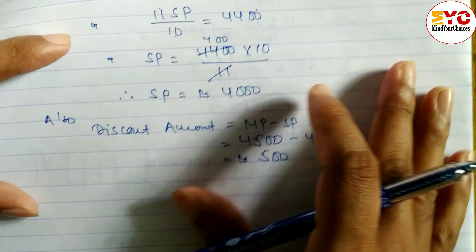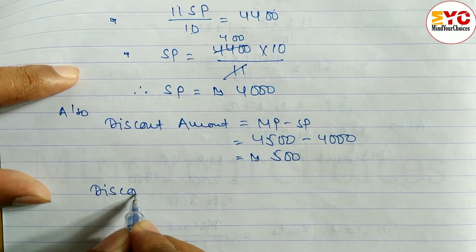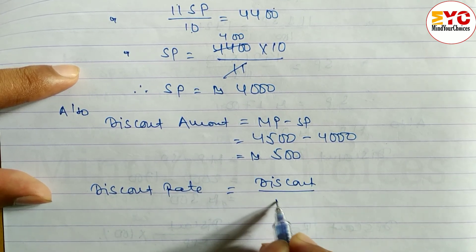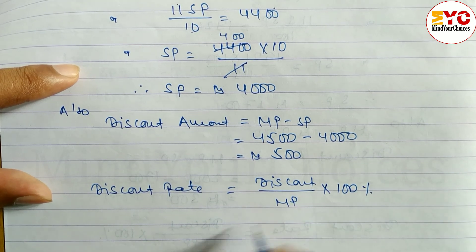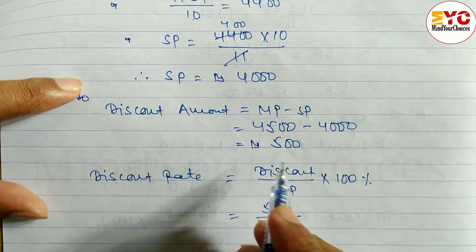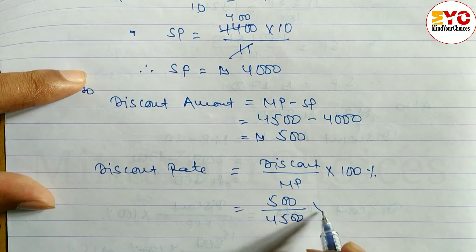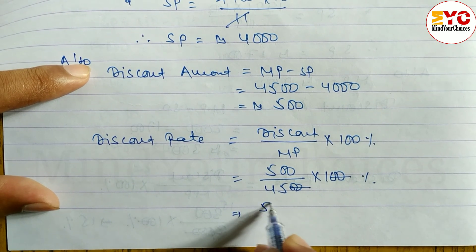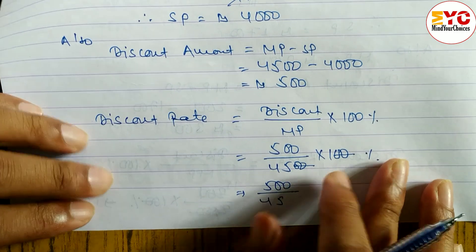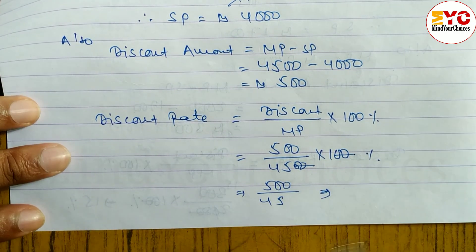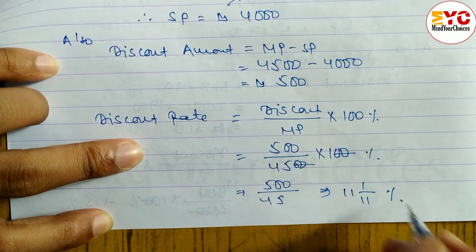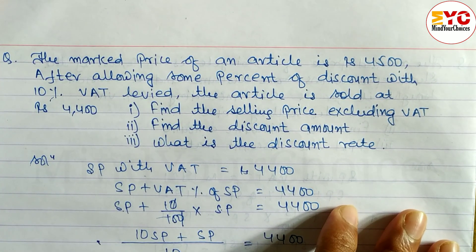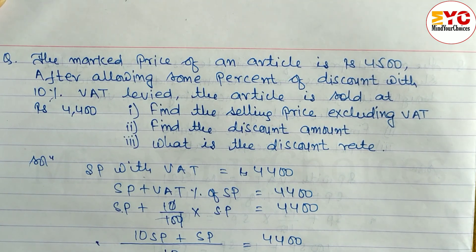Now we find the rate of discount or discount percent. Formula: Discount / MP × 100%. Discount = 500, MP = 4500. So 500 / 4500 × 100% = 500 / 45 = 11 and 1/9 percent. Discount rate = 11 1/9%. This question is from the Value Added Tax chapter, Class 9, which is also very important for Class 10. Thanks for watching — keep supporting and sharing.